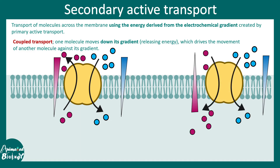We can also have molecules moving in the same direction but along different concentration gradients. In the second example, the pink molecule is moving against the concentration gradient whereas the blue molecule is moving as per the concentration gradient, but the movement is towards the same direction. So it's a symport.